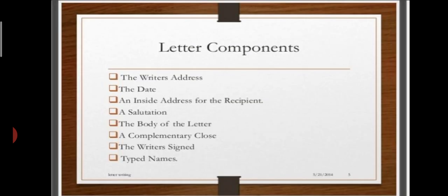Now what are the components of the letters? Like what does the letter include? First thing is the writer's address. You have to write your address because you are writing the letter. Then next is the date. Then after the date, you write an inside address for the recipient to reply back to you. Then a salutation. Next is the body of the letter. After that, you have a complementary clause. The writer's signed and typed names. This is all that holds in the letter. Now this will be a little complicated, but as we move on to our next slides, you will understand, children, what am I trying to say.